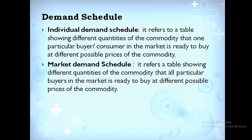Now demand schedule is of two types: one is individual demand schedule and second is market demand schedule. Individual demand schedule mein hum ko demands pata chalti hain individual consumer ki, aur market demand mein pata chalti hain overall consumers in the market. Individual demand schedule refers to a table showing different quantities of a commodity that one particular buyer or consumer in the market is ready to buy at different possible prices of the commodity.